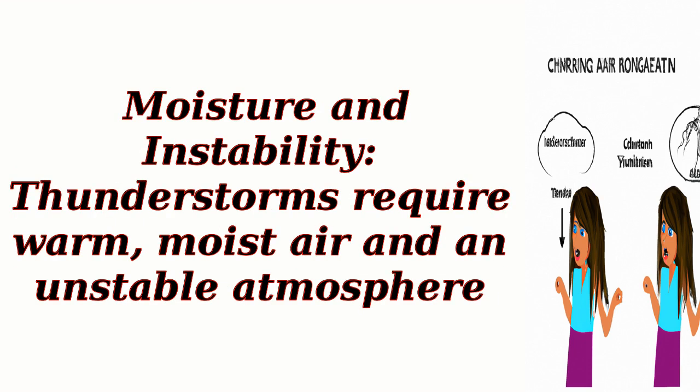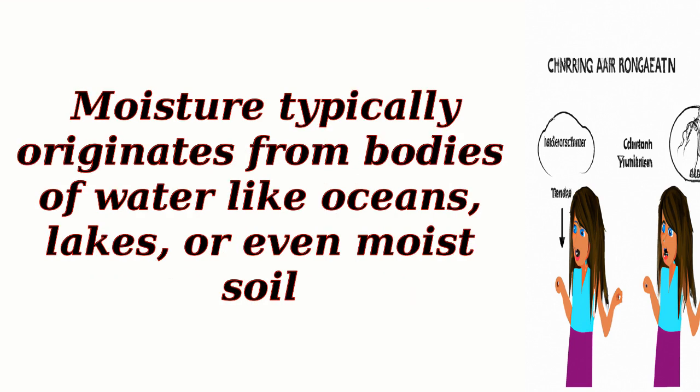Moisture and Instability. Thunderstorms require warm, moist air and an unstable atmosphere. Moisture typically originates from bodies of water like oceans, lakes, or even moist soil.